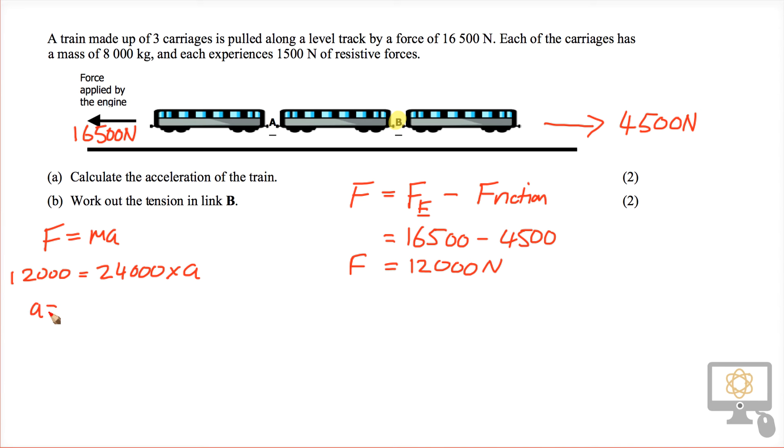This question was made for people that don't have calculators handy. 24,000 times 0.5 will give 12,000, so our acceleration is 0.5 meters per second squared. That's the first question.